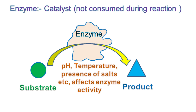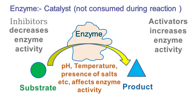A drastic change in pH, temperature, or ionic strength can decrease the enzyme activity. The molecules that decrease or inhibit enzyme activity are called inhibitors, while the molecules that increase enzyme activity are called activators.